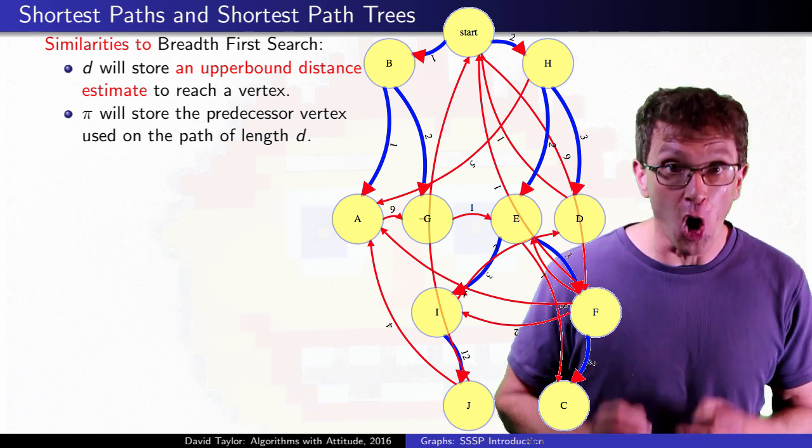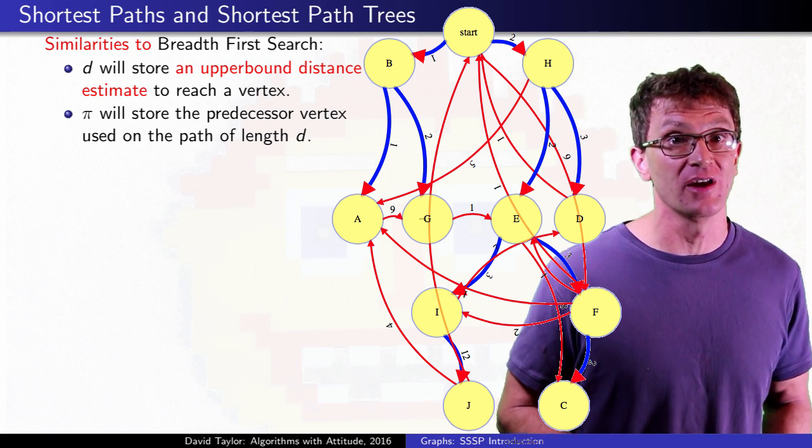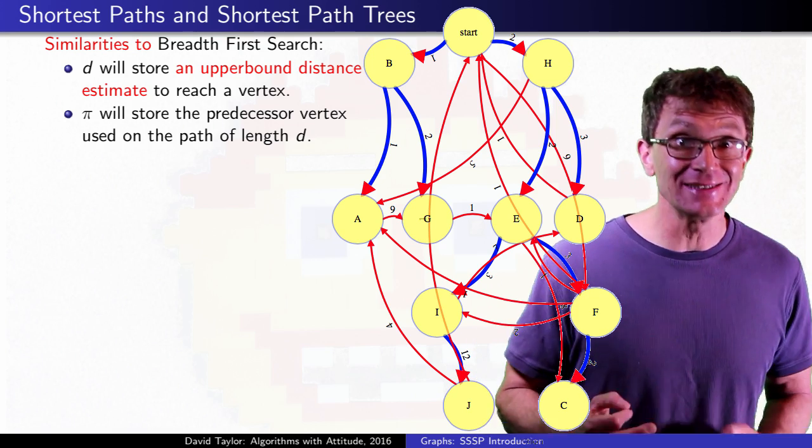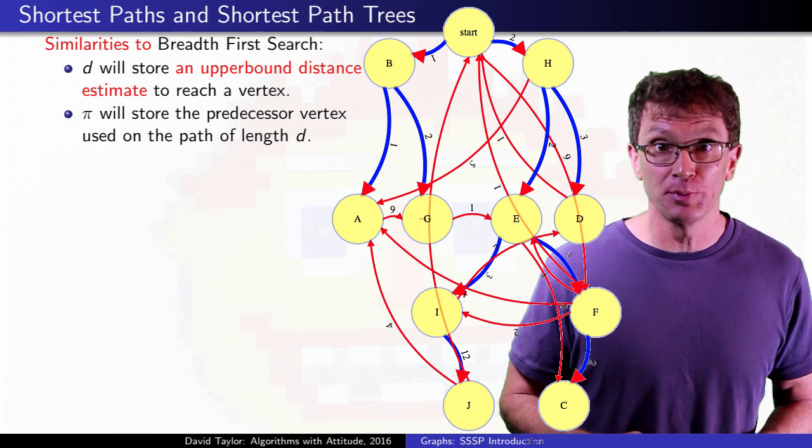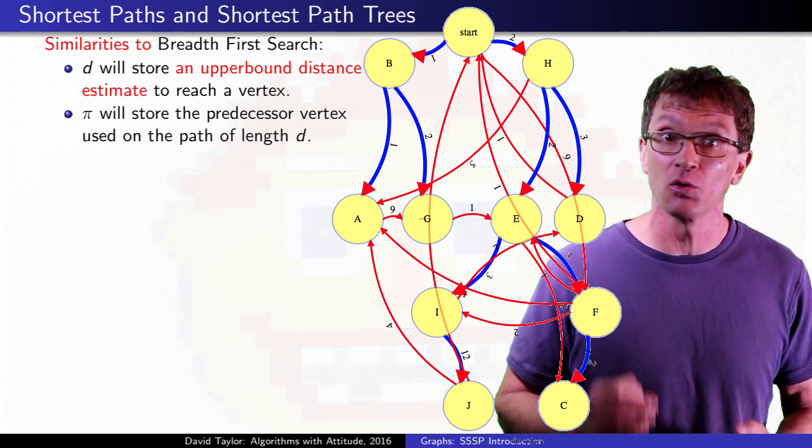The distance we store will always be an upper bound estimate on how far it is from the start vertex to each other vertex, with the value of at least the actual shortest path distance. Then, as the algorithms progress, that estimate is going to get better and better and lower and lower, until it is the correct value.